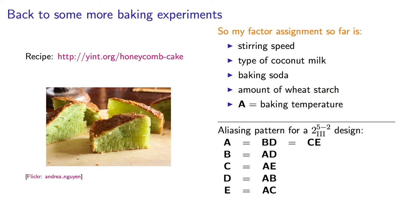Factors that I really want to estimate clearly, I will assign either to B, C, D, or E. Another way that I can use this is, let's say, I know that there's no physical way that factor A times B could interact.